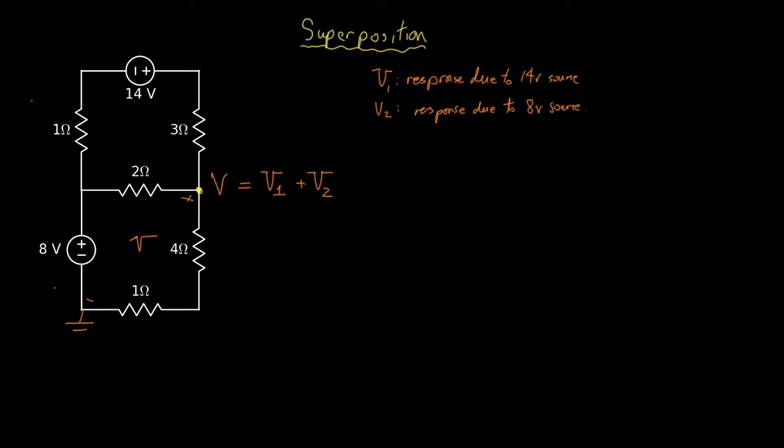How do we find those responses? The method is to think about the circuit response by turning off all of the sources except the one you're interested in and proceeding.